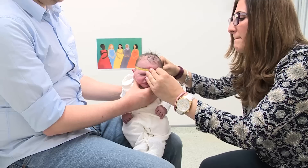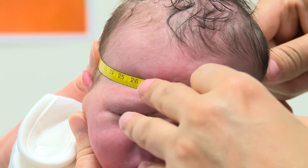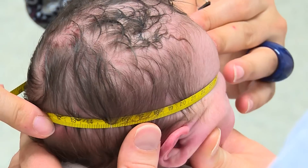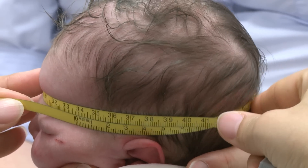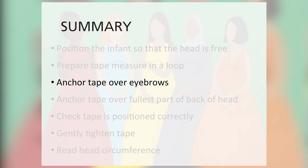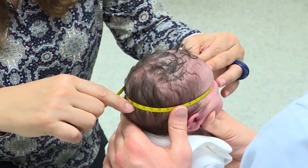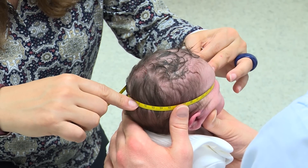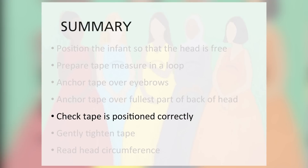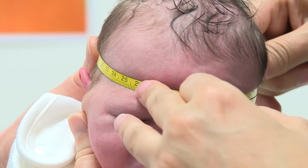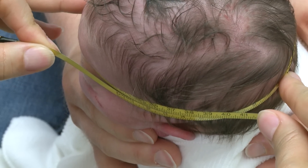Crouching at eye level with the baby, position the tape around the baby's head, with it lying just above the baby's brow line and on the fullest part of the skull at the back of the head. The zero should be somewhere by the side of the head. The assistant holding the baby needs to ensure that the tape is lying flat, not lying over the ear on their side, is level and not slanted. To ensure the tape is stable, the measurer can anchor it at the front and back of the head using the middle finger of each hand.